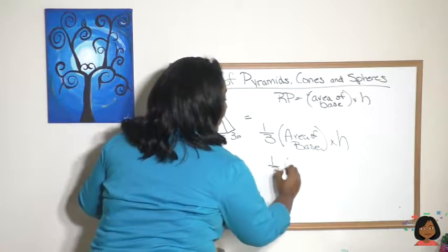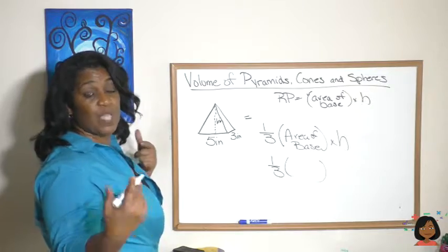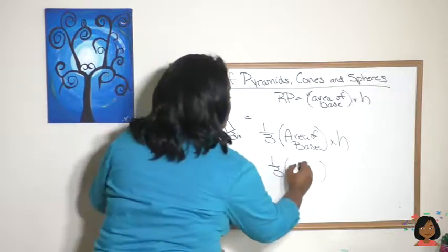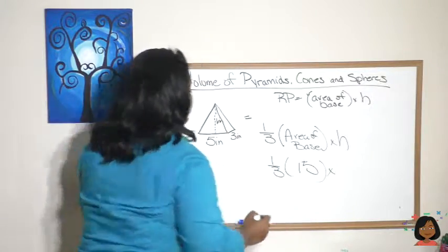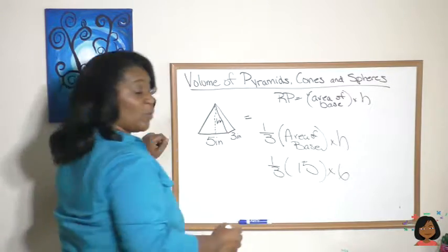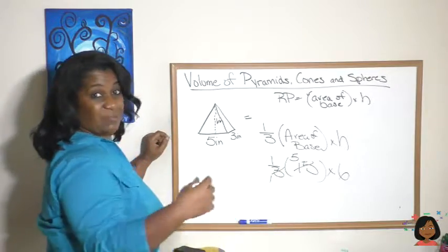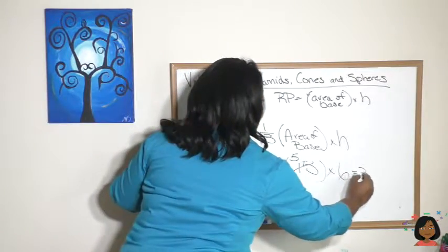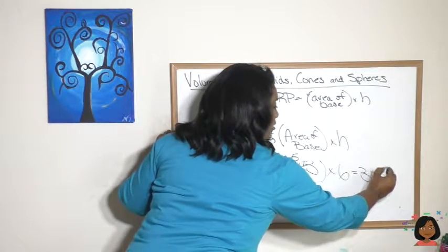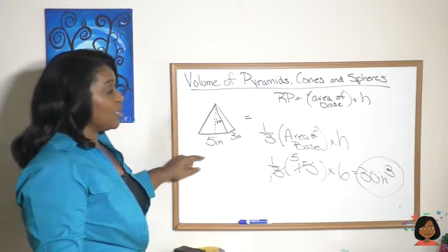Let's plug it in. Well, one-third the area of the base. The area of the base is a rectangle: length times width. Five times three is fifteen, and then times our height, which is six inches. We can simplify three and fifteen, which makes it five times six, which is thirty inches. And with volume, the label is always going to be cubed: thirty inches cubed.